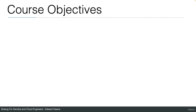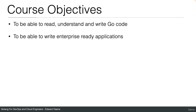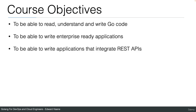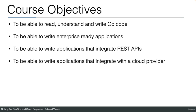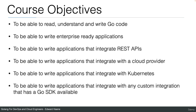What are the course objectives? To be able to read, understand, and write Go code. To be able to write enterprise-ready applications. To be able to write applications that integrate with REST APIs, with a cloud provider, and with Kubernetes. And to be able to write applications that integrate with any custom integration that has a Go SDK available. Once you've seen enough examples, you should be able to write Go applications using any SDK available, because you should know how to do it or how to figure it out.